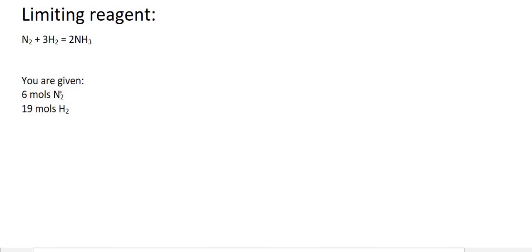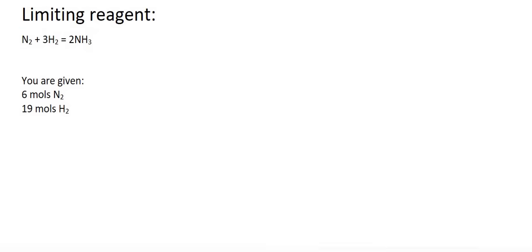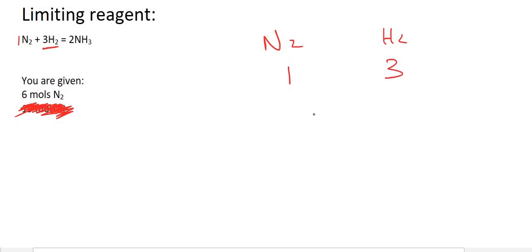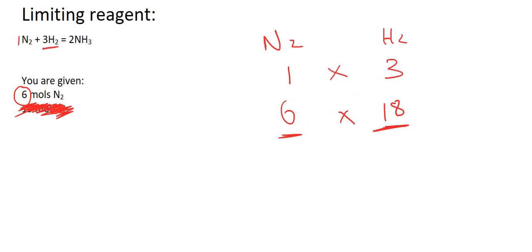Here we are given the balanced equation, which is like our recipe. Now we are given six moles of nitrogen. The balanced recipe is in a 1 to 3 ratio for nitrogen to hydrogen. They've given us six nitrogens, so you times by three and that gives us 18. To use up six nitrogens, you will need 18 hydrogens. Let's see if we have enough hydrogen — there are 19 hydrogens, which is more than enough.